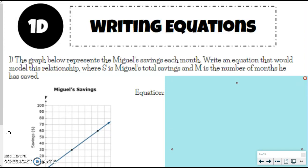So the graph below represents Miguel's savings each month. Write an equation that would model this relationship where S is Miguel's total savings and M is the number of months he has saved. Now I'm going to tell you right now, yes you really should use the S and M that they use in here but we also have been writing all of our equations with Y and X so if you want to do that too, it really doesn't bother me as long as you're making sure you're matching up the independent and dependent variable.